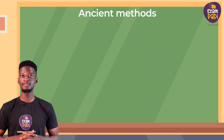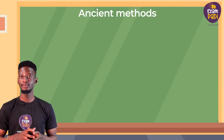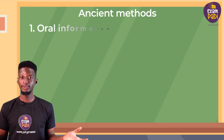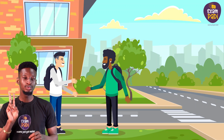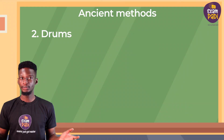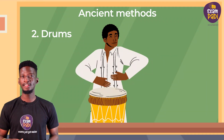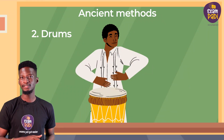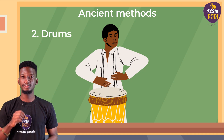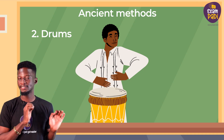The ancient methods of transmitting information in the olden days include: 1. Oral information — this is an ancient method of transmitting information verbally between individuals or two parties. 2. Drums — these are commonly used and beaten at intervals by town criers who usually move around villages in rural areas to attract villagers' attention.